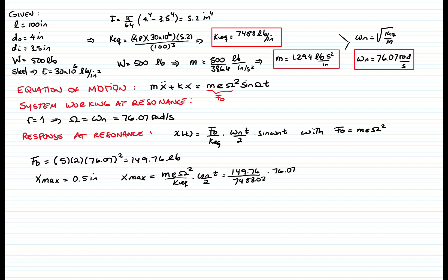The omega n is 76.06, divided by 2, and times. That time is the one that I want to find. And if I multiply all these numbers, I get a value of 0.7607 times t, and that has to be less than 0.5 inches. So the time is equal to 0.6502.